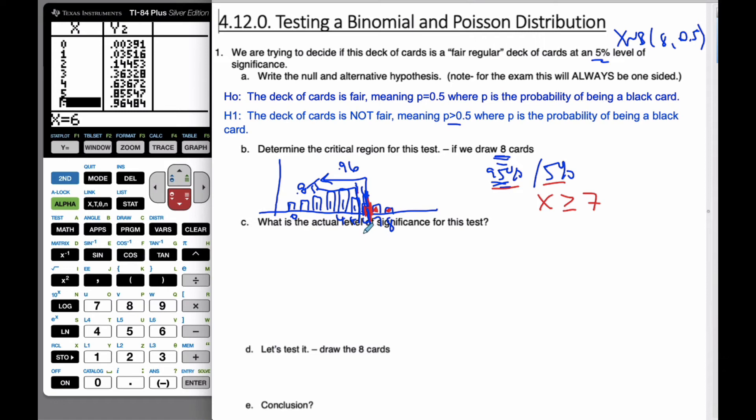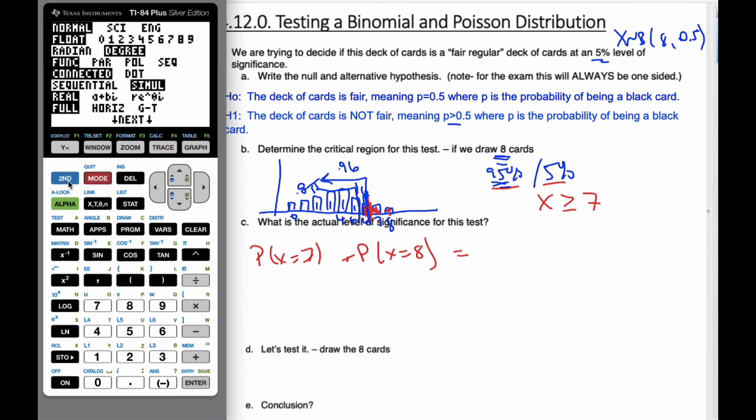The actual level of significance of the test, then, the actual level is going to be the probability that x equals 7 plus the probability that x equals 8, is the actual significance of the test. Those two red portions here. So if I want to find that, I know that up to 6 is 96.4, so then I want to subtract that. So I'm going to go, in order to find that, then,